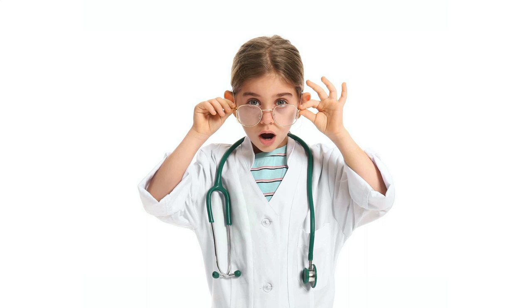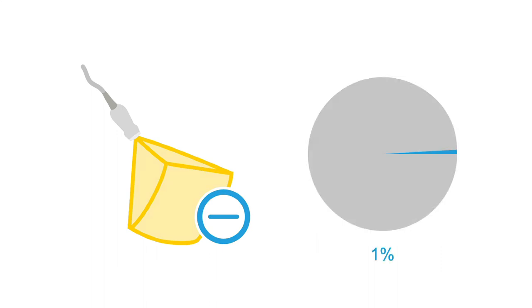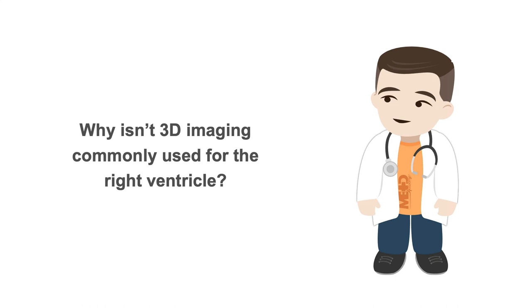Interestingly, 3D echo is not widely used for determining right ventricular function as it's only used in around 1% of cases currently. Why isn't 3D echo commonly used for the right ventricle?